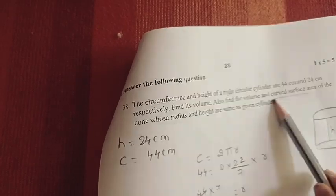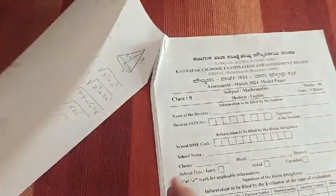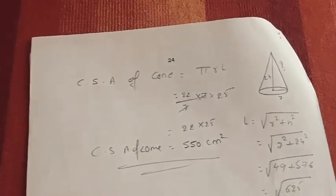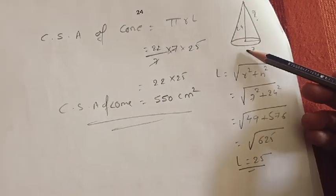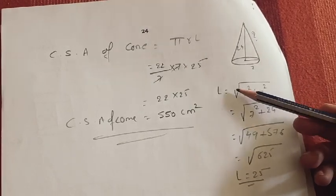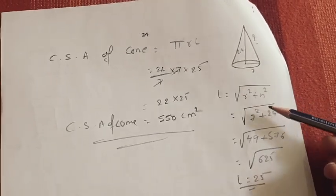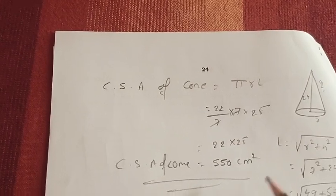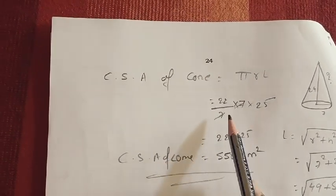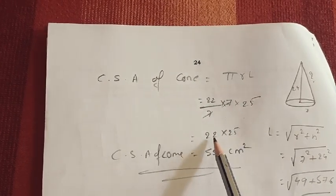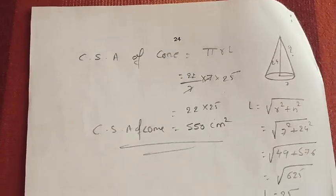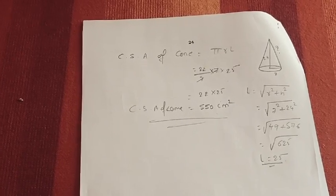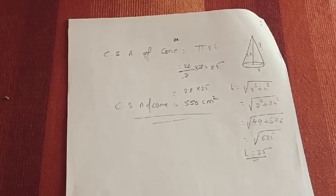After finding the volume of the cone, we need the curved surface area of the cone. The formula is CSA = πrl. We don't have l, so find it using Pythagoras theorem: l equals square root of r² plus h² — that is square root of 7² plus 24², which gives l equals 25. So CSA equals π × r × l = 22/7 × 7 × 25 = 550 square centimeters. This is the 9th standard question paper fully solved. Thanks for watching — subscribe the channel for the next paper!